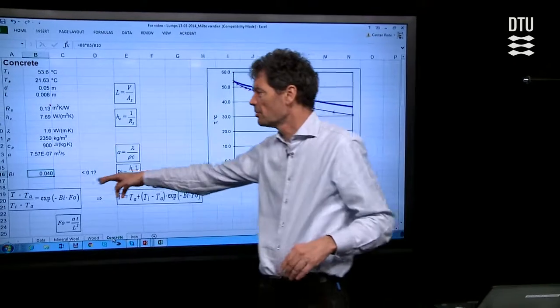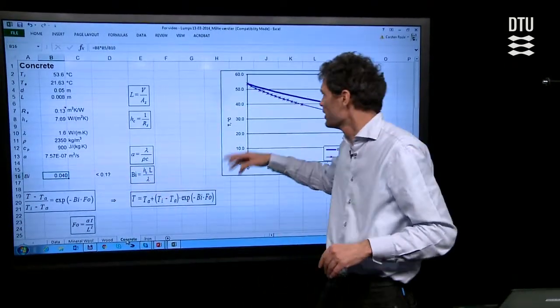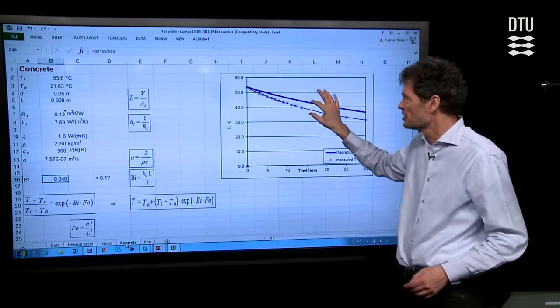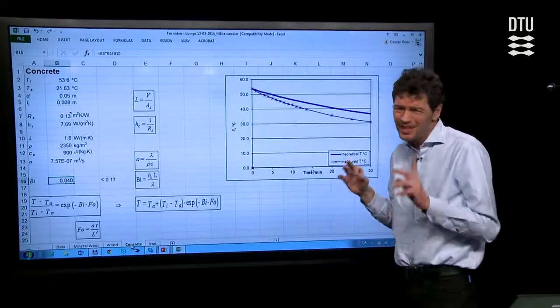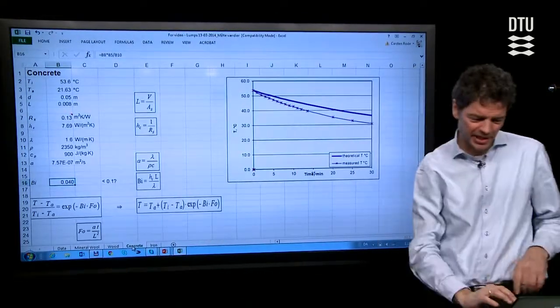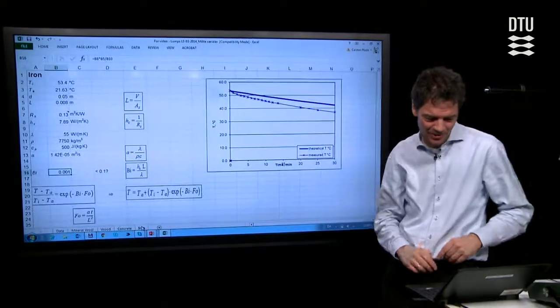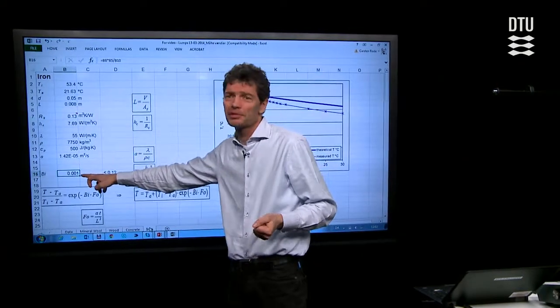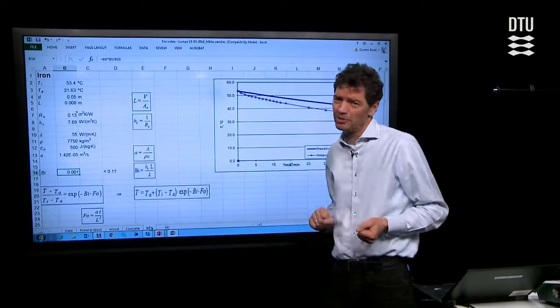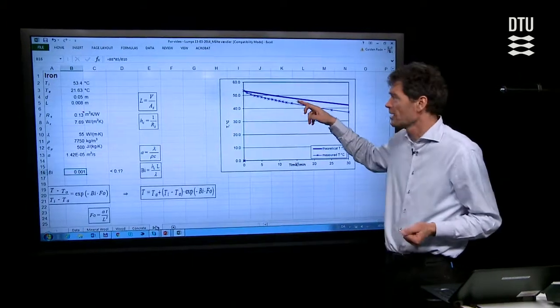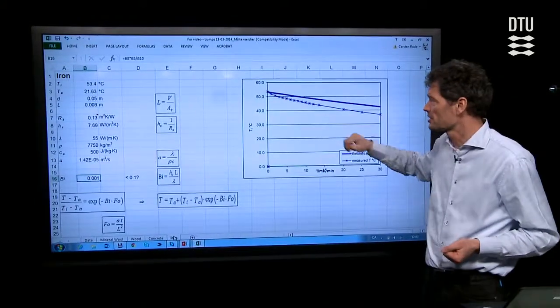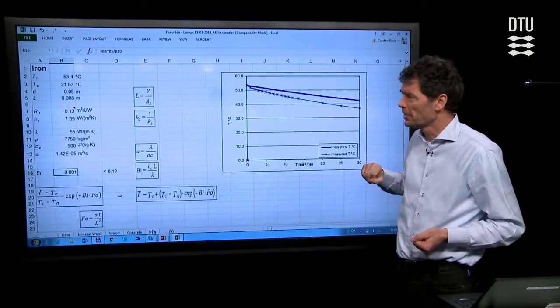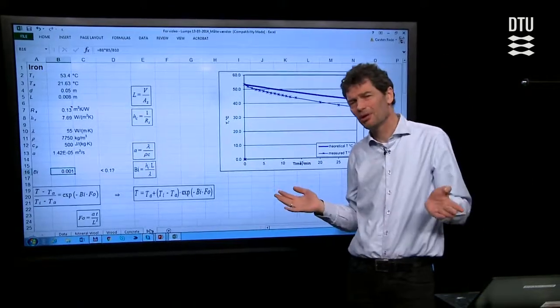For concrete, the Biot number is 0.04, so the theory should hold. But actually, it looks even worse, the discrepancy between theory and measurement. So that's perhaps not so good. Let's see the perhaps supposedly best material, the iron. For iron, the Biot number is 0.001, certainly less than 0.1. But again, like for concrete, there's certainly a discrepancy in this direction that the analytical solution expects a slower cooling than what we measured. So does the theory not hold then?